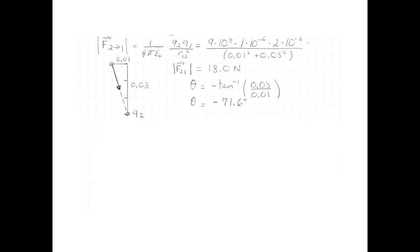To find the direction of the force that 2 exerts on 1, I'm going to do exactly the same thing. I'm going to draw the force on 1, pointing towards 2, and that force is going to be a negative angle if I start from the positive x-axis. The opposite side is going to be 0.03, and the adjacent side is going to be 0.01. So I just take the inverse tangent and get my angle of negative 71.6 degrees.